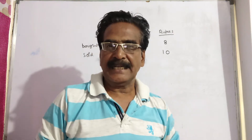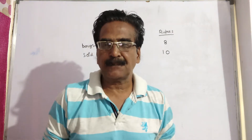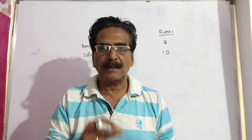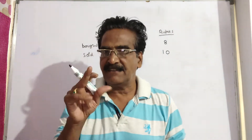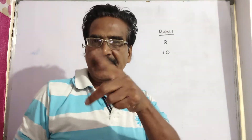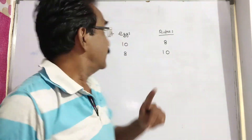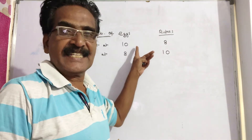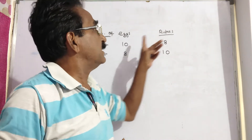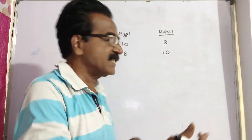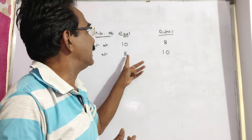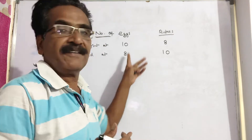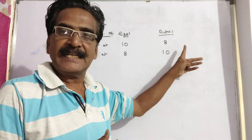Hi friends, good morning. Let us look at the next problem in profit and loss. The problem is given in the description box. A grocer buys eggs at 10 for rupees 8 and sells them at 8 for rupees 10.